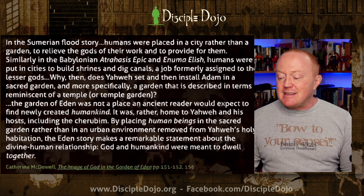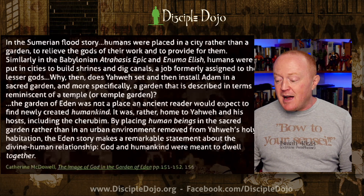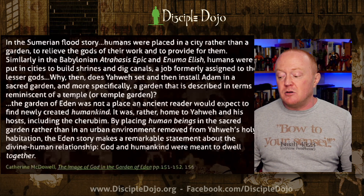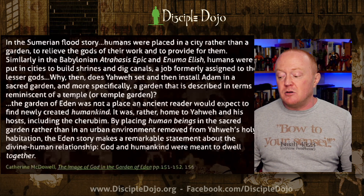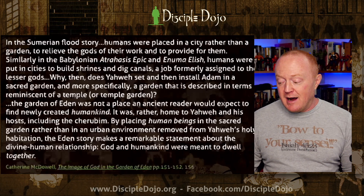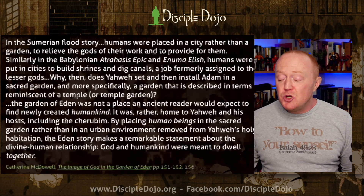'The garden of Eden was not a place an ancient reader would expect to find newly created humankind. It was rather home to Yahweh and his hosts, including the cherubim. By placing human beings in the sacred garden rather than in an urban environment removed from Yahweh's holy habitation, the Eden story makes a remarkable statement about the divine-human relationship: God and humankind were meant to dwell together.' That is monumental in the ancient world, where god is always somewhere away that you have to flag down to get their attention.